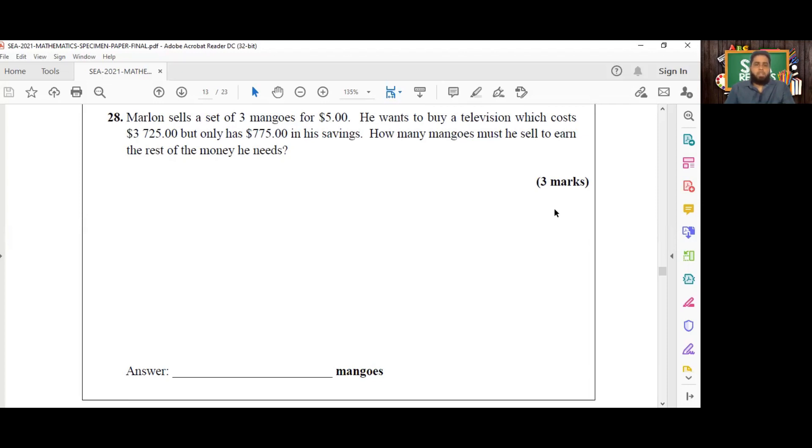So first of all, we're going to determine how much money Marlon needs to save in order to buy that television. He already has $775 and he has a goal of $3,725. So all we need to do is subtract what he has from what he requires. He requires $3,725 and he has $775 in his savings.